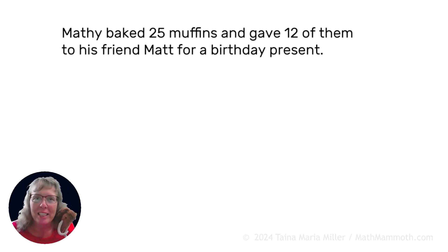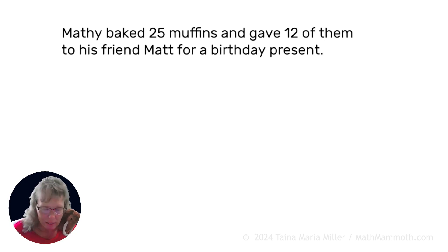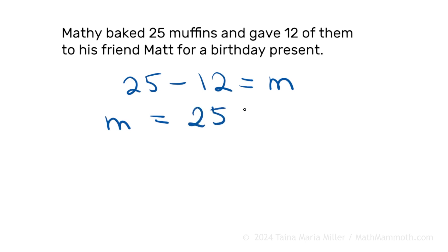How many muffins are left for Mathie to eat? We need to choose an unknown and a letter to represent that unknown. Since this has to do with muffins, let's use M. We could write that there are 25 muffins and 12 of them go away — and if you calculate that, it gives you how many are left: M, the muffins. Or you could write it this way: M equals 25 minus 12. Either way.